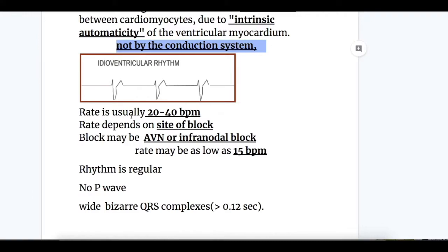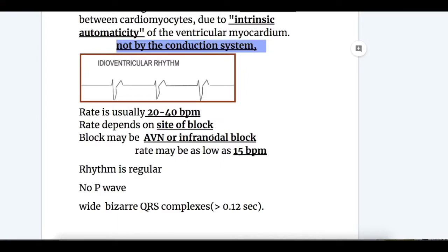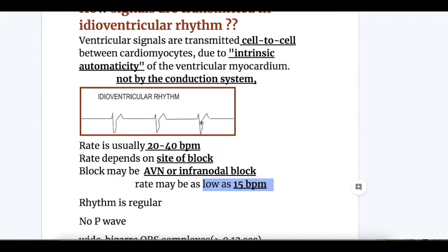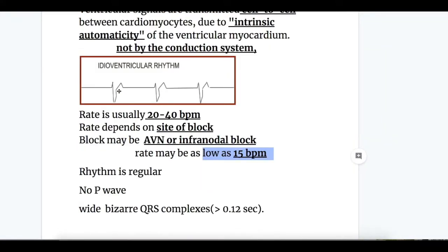The rate is usually 20 to 40 beats per minute in idioventricular rhythm, but the rate depends on the site of the block. The block may be at the AV node or infranodal. In infranodal block, the rate may be as low as 15 beats per minute. The rhythm is regular, the P wave is absent, and there are wide bizarre QRS complexes — wide QRS with slow rate and absent P wave.